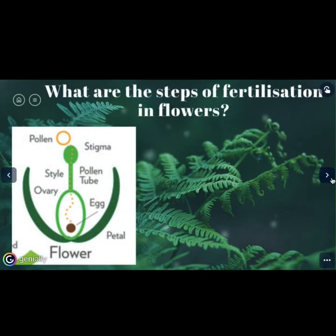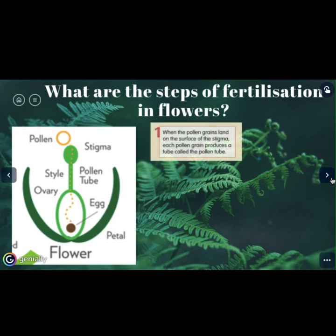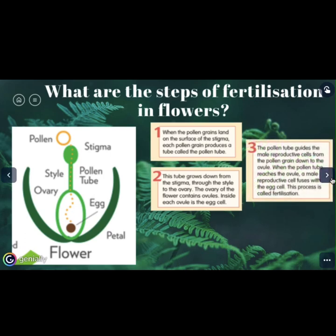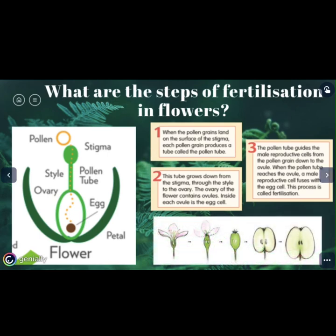What are the steps of fertilization in flowers? Number 1: when the pollen grains land on the surface of the stigma, each pollen grain produces a tube called the pollen tube. Number 2: this tube grows down from the stigma, through the style to the ovary. The ovary of the flower contains ovules, and inside each ovule is the egg cell. Number 3: the pollen tube guides the male reproductive cells from the pollen grain down to the ovule. When the pollen tube reaches the ovule, a male reproductive cell fuses with the egg cell. This process is called fertilization.